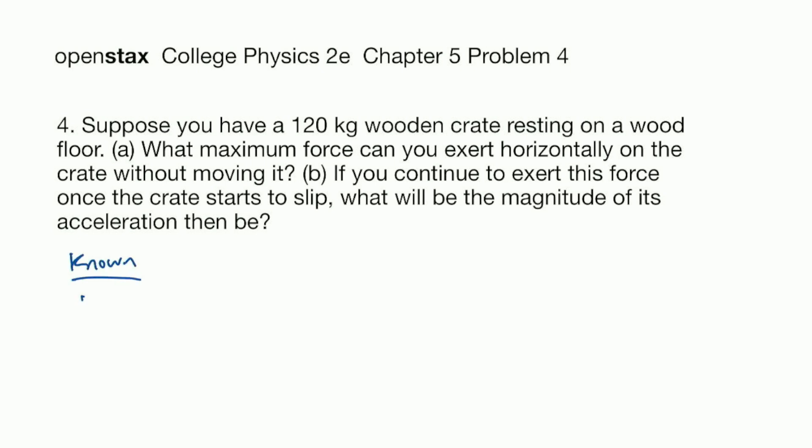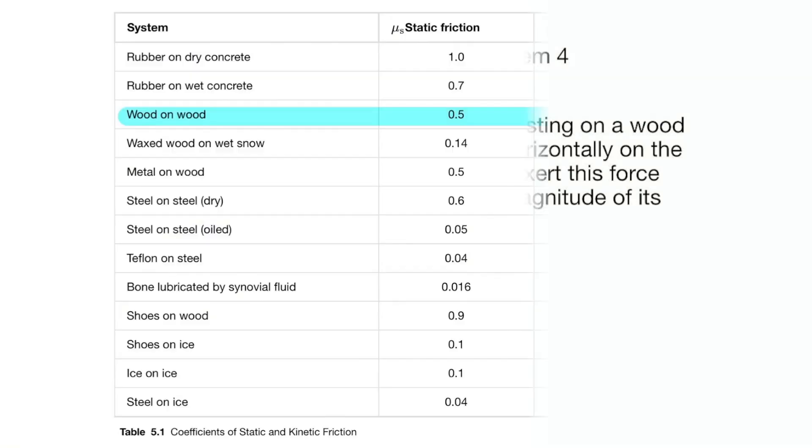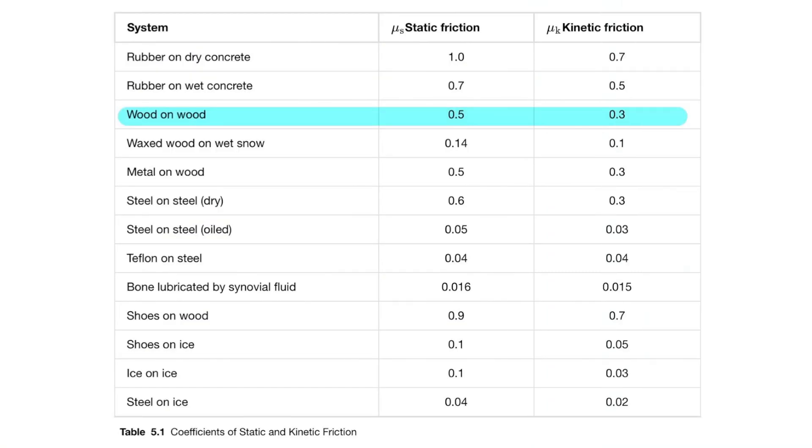We know the mass is 120 kilograms. We have wood on wood, and we're going to be looking for friction, so let's look at Table 5.1.